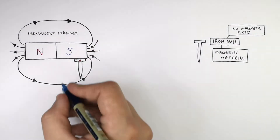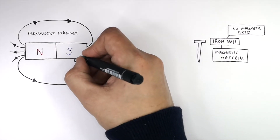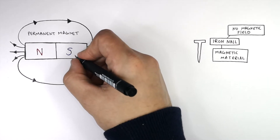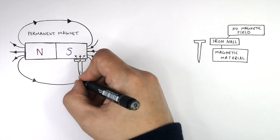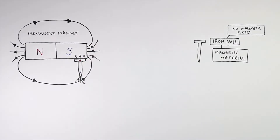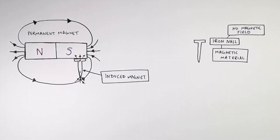This iron nail is now an induced magnet. This is because the magnetic material has now turned into a magnet when it's in a magnetic field — this is an induced magnet. I'm drawing the magnetic field lines of the induced magnet of the iron nail here. If we place the iron nail at the South Pole of the magnet, this part of the iron nail is North, and there is an attraction between the North Pole of the induced magnet and the South Pole of the permanent magnet.